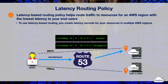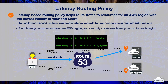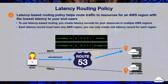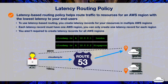Latency between hosts on the internet can change over time as a result of changes in network connectivity and routing. Latency-based routing is based on latency measurements performed over a period of time. Each latency record must have one AWS region associated with it. You can only create one latency record for each region, and you are not required to create latency records for all AWS regions. Route 53 chooses the region with the best latency from among the regions that you create latency records for. You cannot create non-latency records that have the same values for name and DNS record type as latency records.